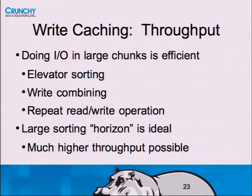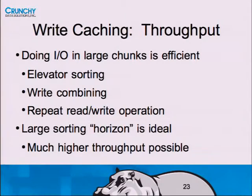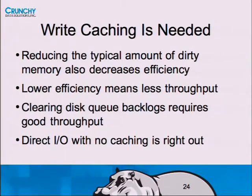There are a couple of mechanisms at play. When you do IO in big chunks it does elevator sorting - taking things on the same disk area and putting them together. It does write combining, where two adjacent writes become one operation. Also, if you write something and read it again it just grabs it from cache. All of these things benefit from a larger cache - I call this a 'caching horizon': how far can the cache see, how much visibility does it have into what's coming up. As that number goes up, throughput goes up as well.